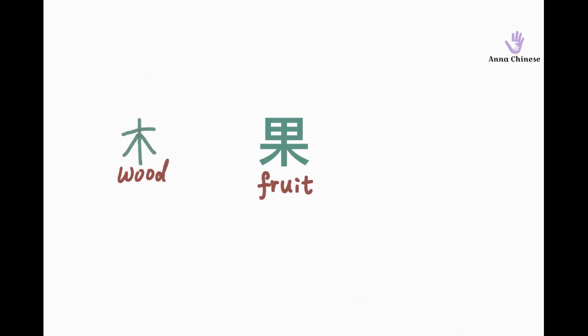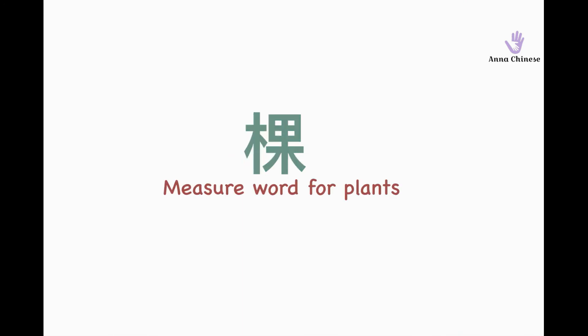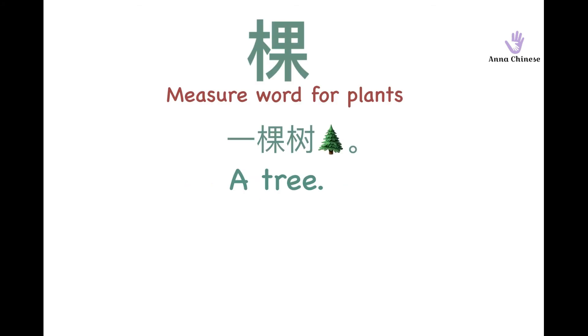If we add another 木 to 果, fruit, then we get a new word, that is 棵. 棵 is a measure word for plants. 一棵树, a tree.